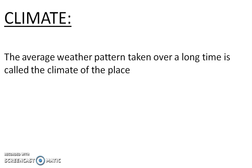Climate is the longer version of weather. It is the average weather pattern taken over a very long period of time — about 25 years at a particular area. How the condition of the weather in a particular area is over 25 years is said to be the climate.